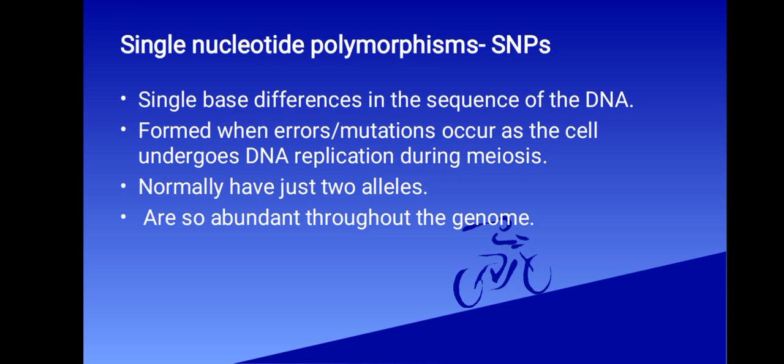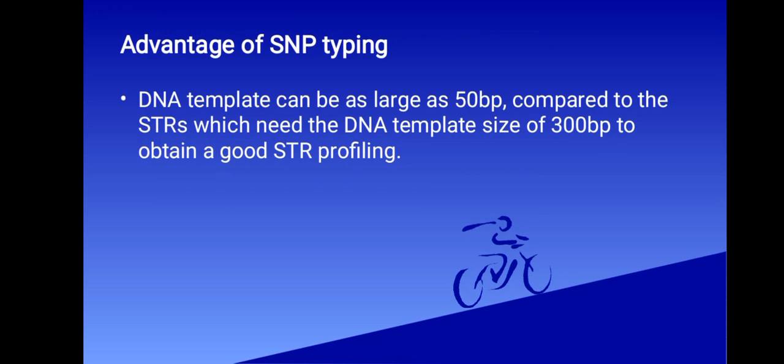The dominance of tandem repeat DNA will continue for the foreseeable future. However, the advantage of SNP typing consists in the fact that DNA template size can be as large as 50 bp, compared to STRs which need the DNA template size of around 300 bp to obtain a good STR profiling. Due to this, SNPs become important tools in analyzing degraded samples, because in degraded samples we don't have a lot of material available.